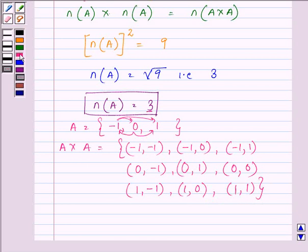Since in the question we were given (-1, 0) and (0, 1), the remaining elements are...